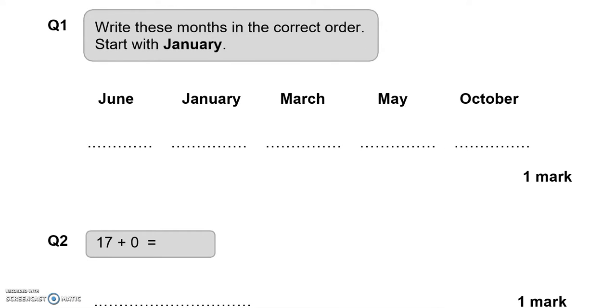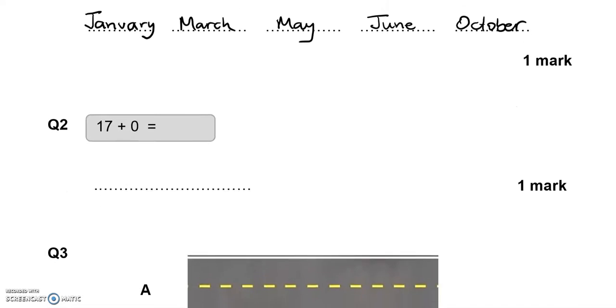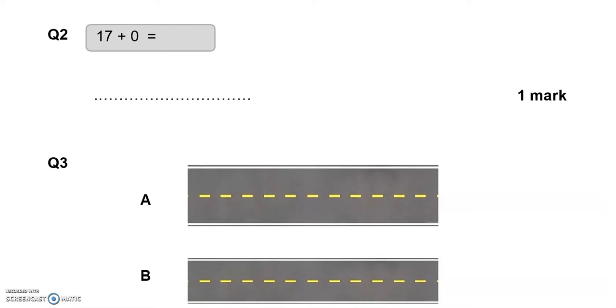There are 24 marks for the second part. Question 1: Write these months in the correct order, start with January. We haven't got February, then March, May, June, July, August, October, and we've got them all there. 17 add 0 equals just 17, nothing has changed.